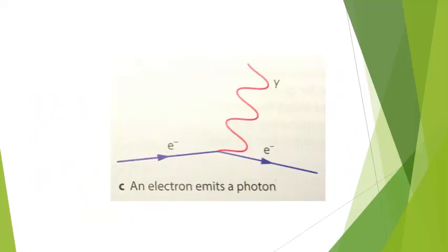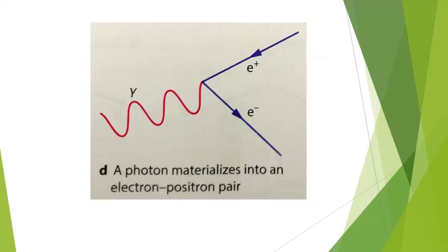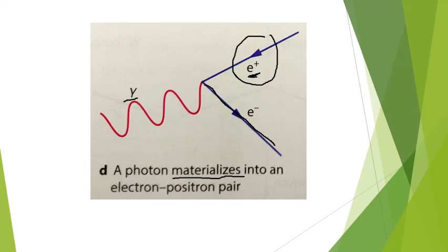In this case, an electron emits a photon — the electron is going up, and as it emits the photon, this one shoots down due to conservation of momentum. In another diagram, a photon actually materializes: energy materializes into matter, producing an electron as well as a positron. Anytime you have an anti-particle, their arrow is going to be pointing against time — though as we saw, it's not really going backwards in time.